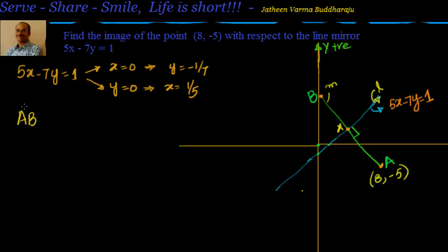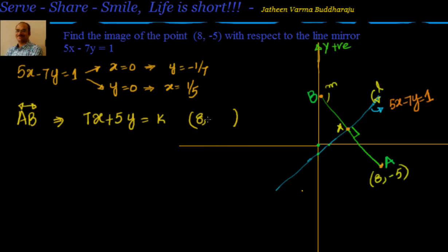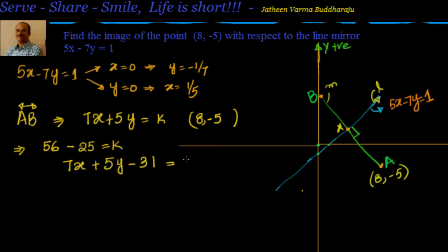First we have to find out the equation of AB. For equation of AB, I know it will be perpendicular to 5x minus 7y equal to 1, so I can write 7x plus 5y equal to K. It also has to pass through the point (8, -5). Substituting, I get 7 times 8 minus 5 times 5 equal to K, giving 56 minus 25 equal to 31, so the equation is 7x plus 5y minus 31 equal to 0. This is the equation of line AB.